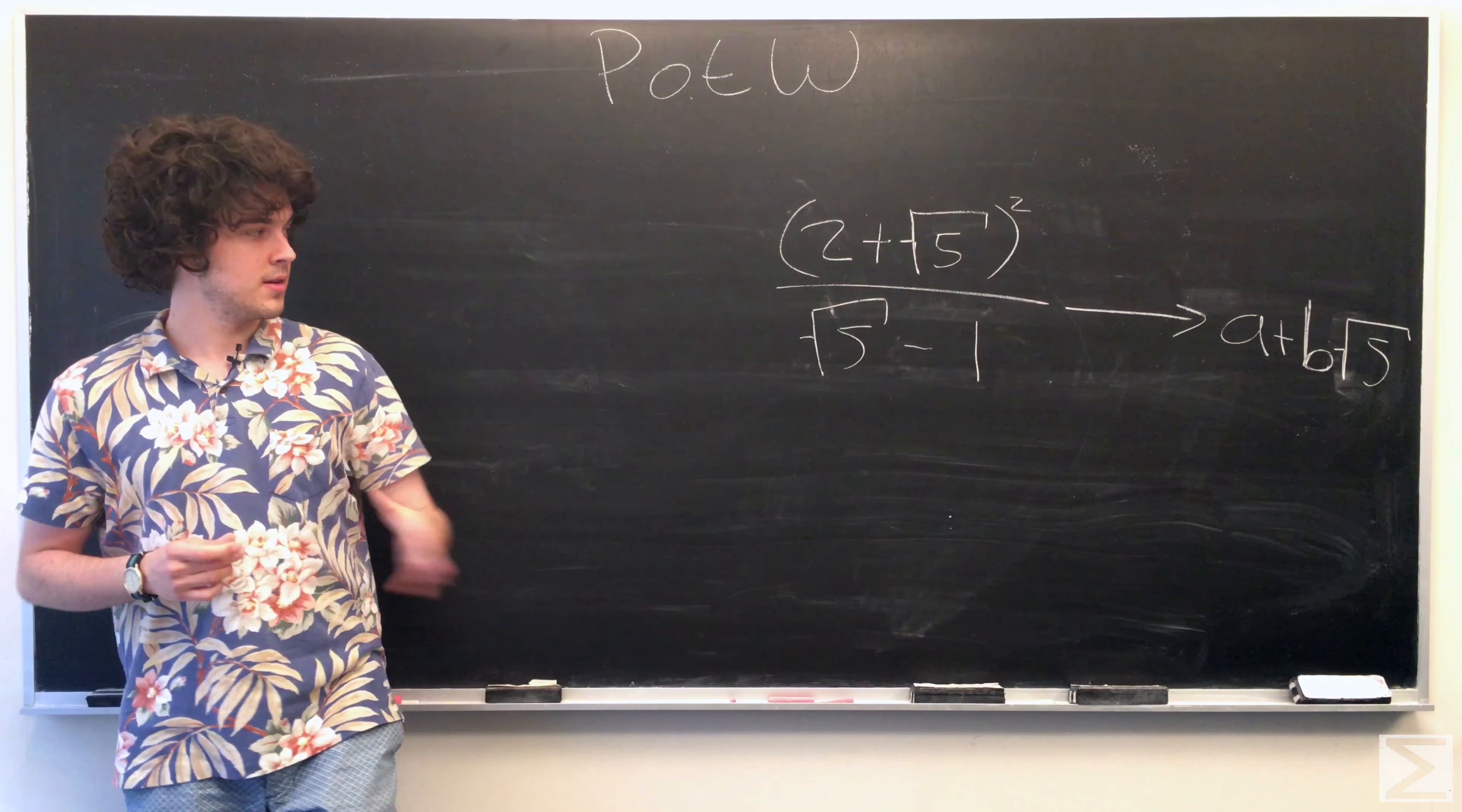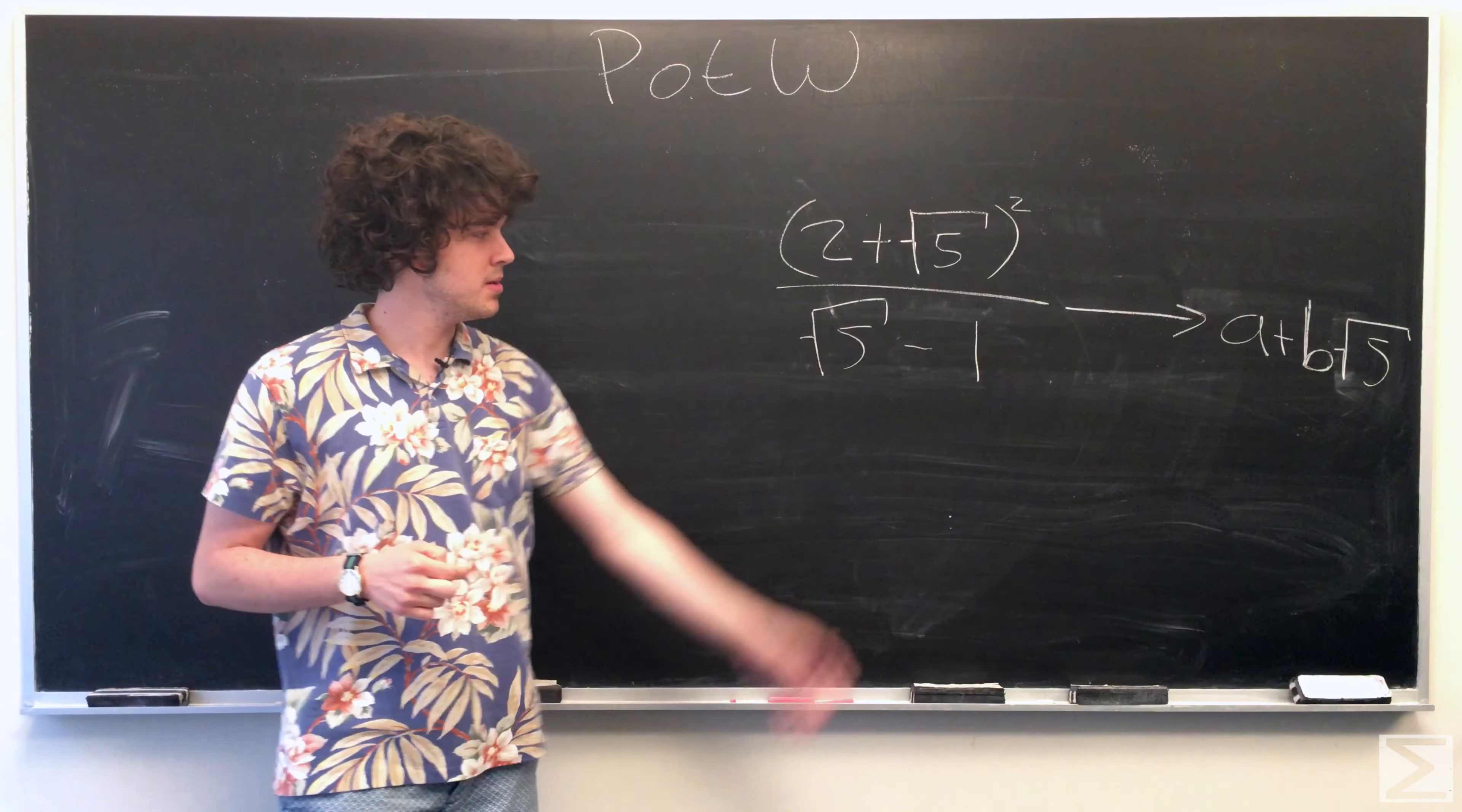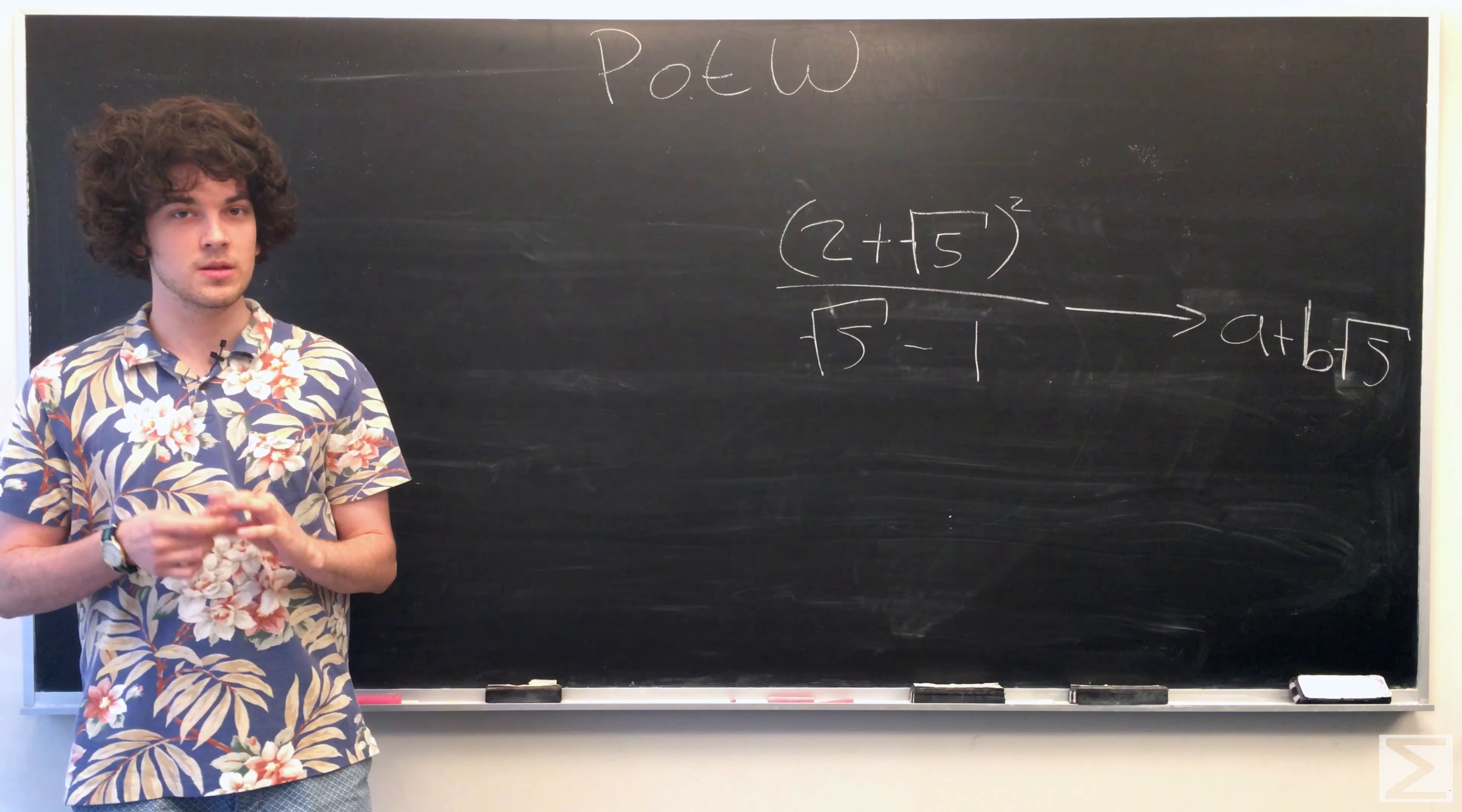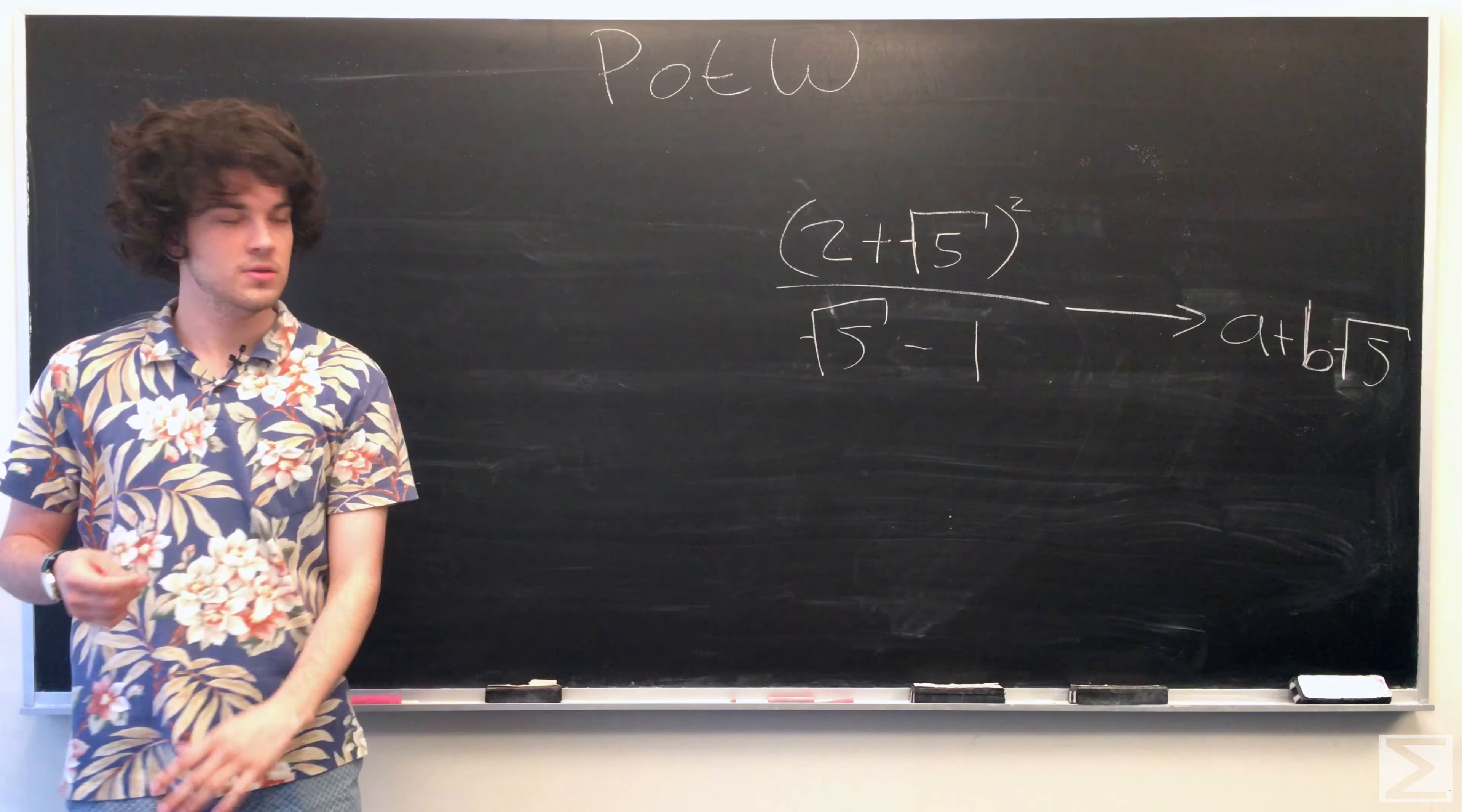So to get there, we have to massage this bottom part a little bit. And of course, we have a minus b. So if we multiply that by a plus b, the cross terms are going to cancel out. So I'm going to do those first two steps here.